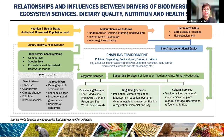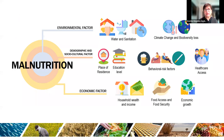The relationships and influences between drivers of biodiversity, ecosystems, dietary quality, nutrition, and health status have been mentioned. Biodiversity in the food system directly affects dietary quality and food security, as well as nutrition and health, ultimately bringing about malnutrition in all its forms.